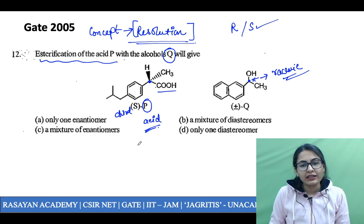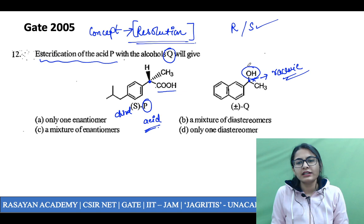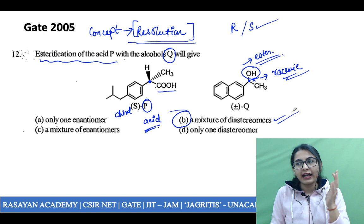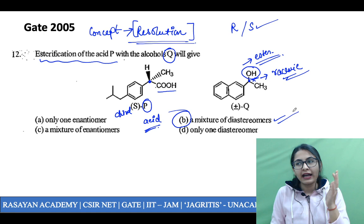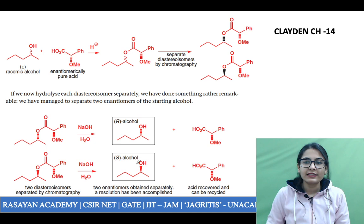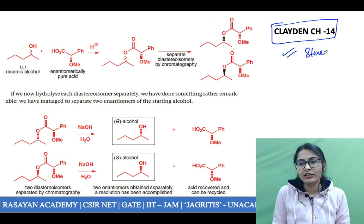When your reaction between an acid and alcohol takes place, they are going to give you an ester — but what is the property of the ester? Is it going to be enantiomerically pure, one single diastereomer, or a mixture of diastereomers? Your answer has to be a mixture of diastereomers, and this is the application of how you separate a racemic mixture into two enantiomers. The answer is option B, directly from Clayden chemistry chapter 14, which is based on stereochemistry.